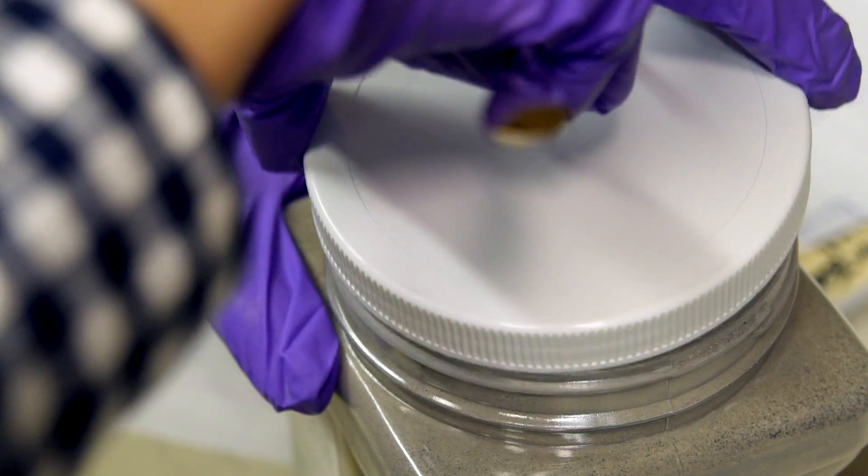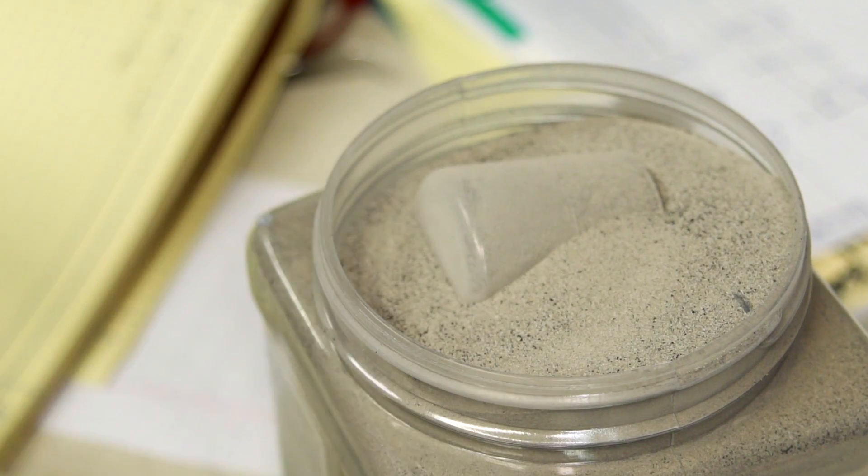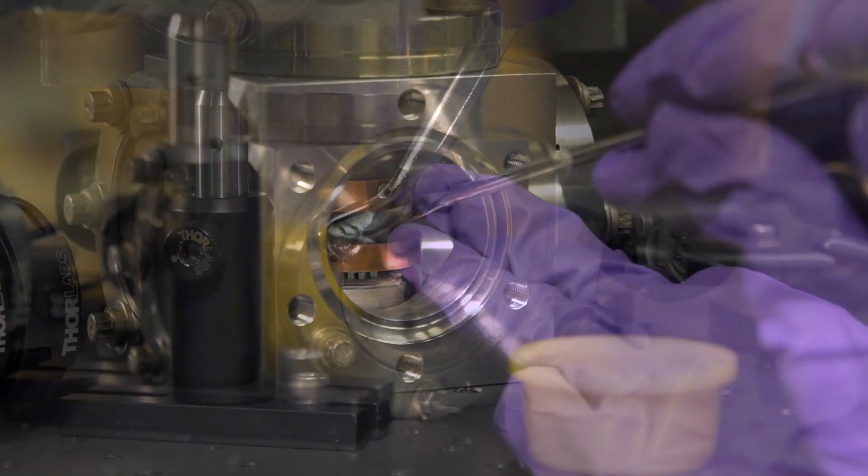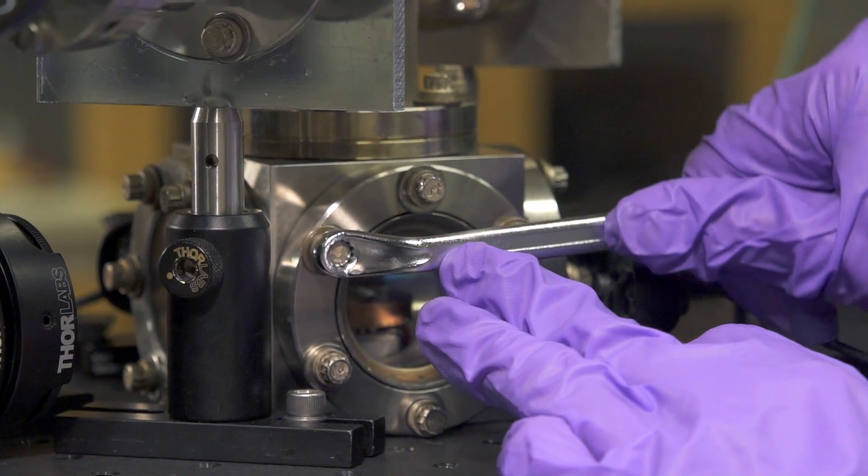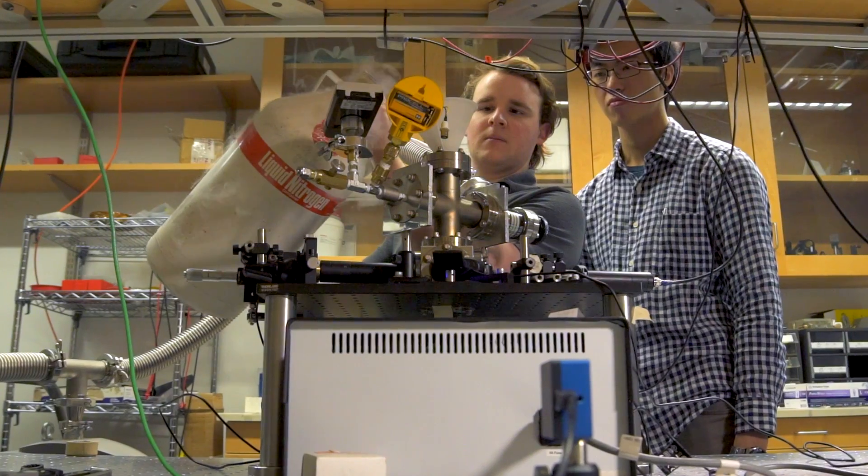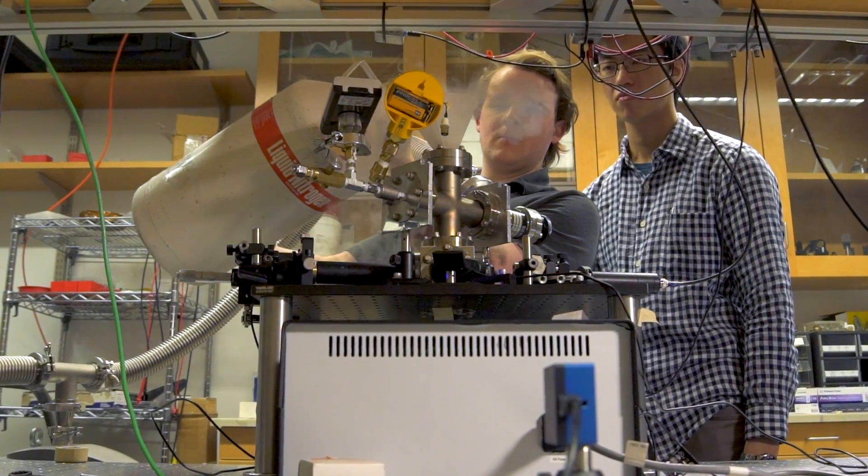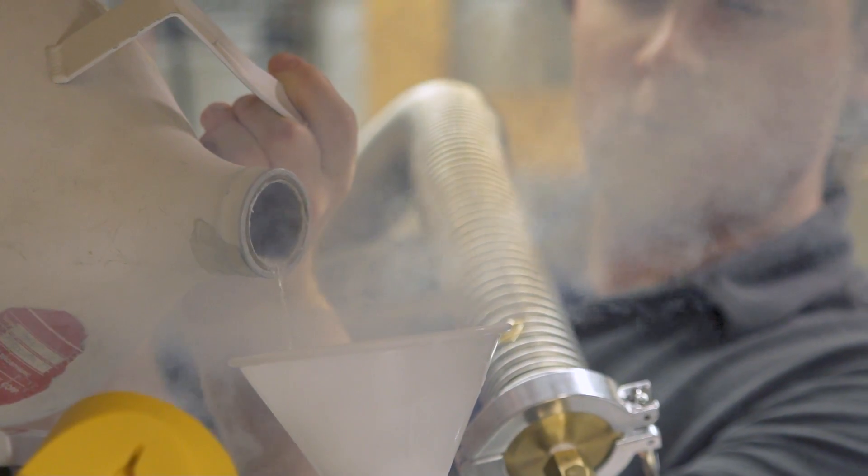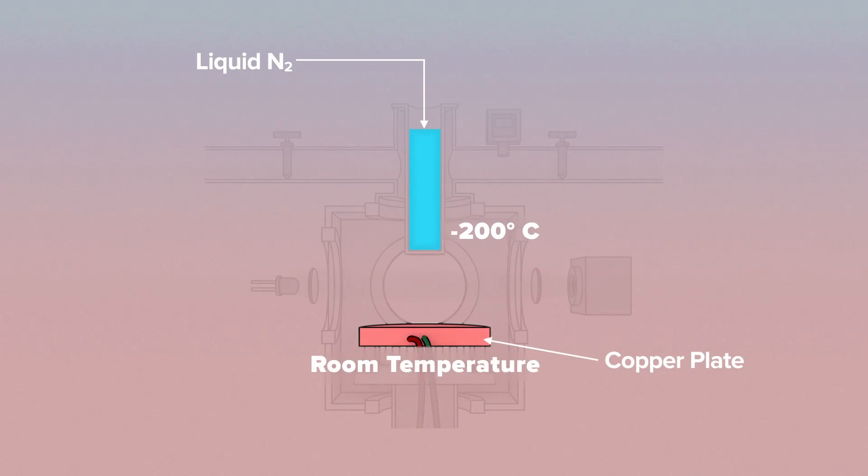To run the experiment, we open up the chamber and put ceramic particles onto the bottom plate. Then we close the chamber up again, and use the vacuum pump to pump the system down to a very low pressure. Then we pour liquid nitrogen onto the top plate to cool it down to minus 200 degrees Celsius. The bottom plate is kept at room temperature. These two plates are separated by one centimeter, so you have a 200 degree difference over this very small gap.